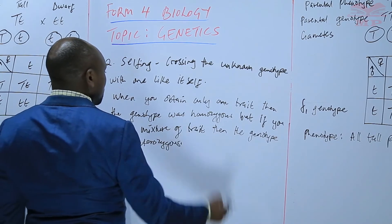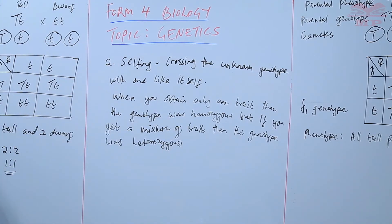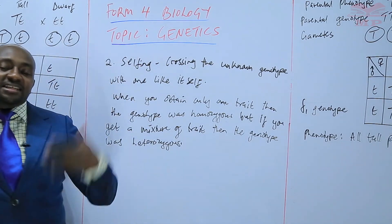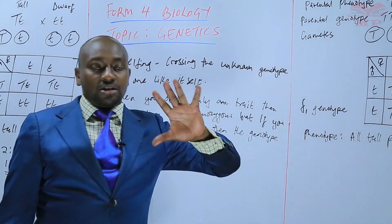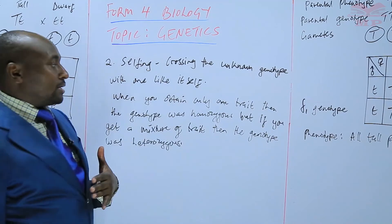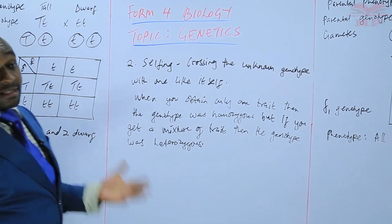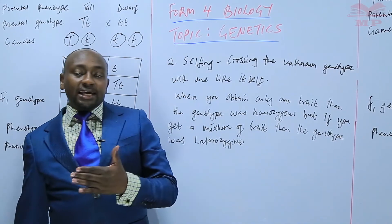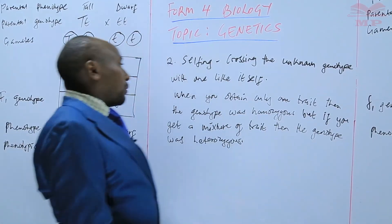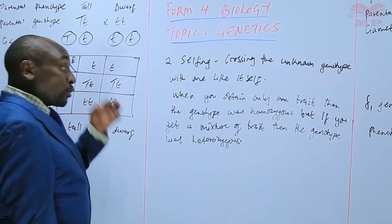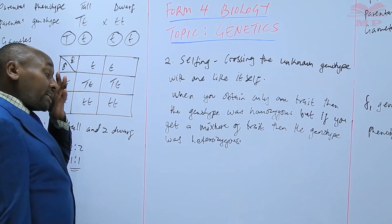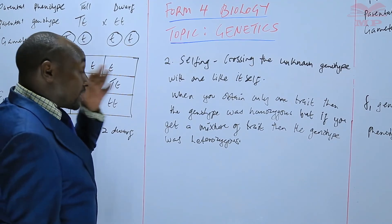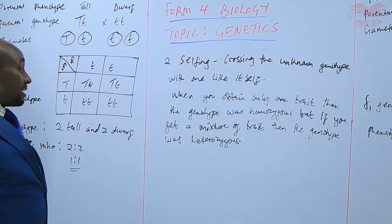Selfing is crossing an individual with one like itself. If it is homozygous, we'll get just that one trait — only tall, for example. Or if it is the color of flowers we are investigating, we'll only get red. But if you cross and get a mixture, we know the genotype was heterozygous. That is selfing — crossing the unknown genotype with one like itself.